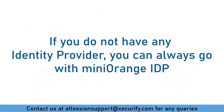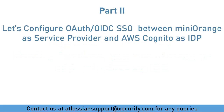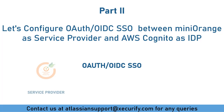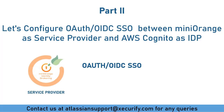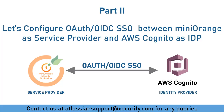If you do not have any identity provider, then you can always go with MiniRange and your setup ends here. Let's now configure OAuth/OpenID Connect in MiniRange as a service provider using AWS Cognito as IDP.